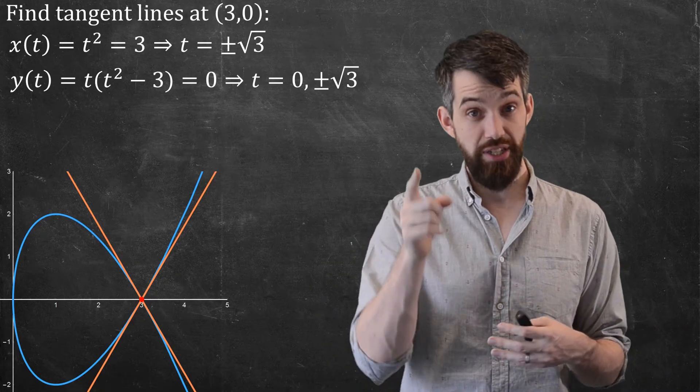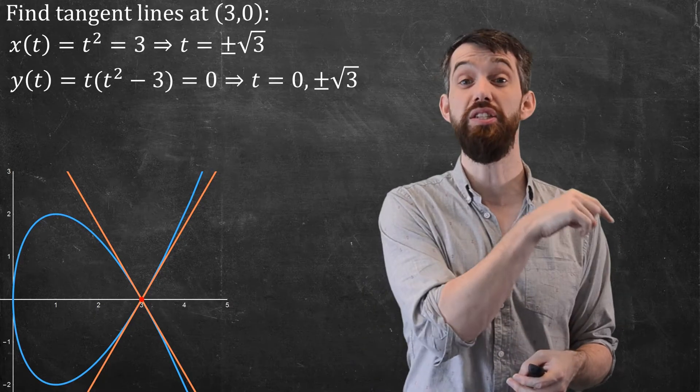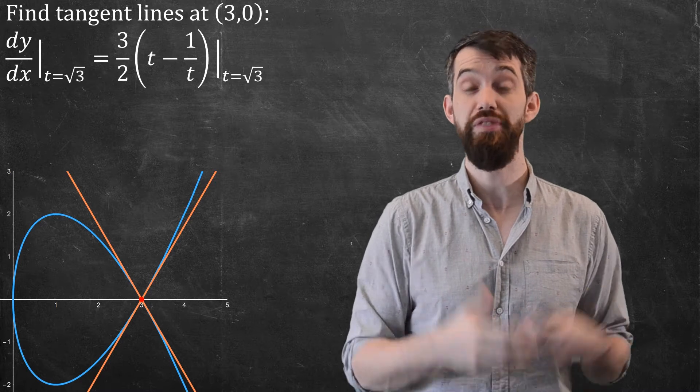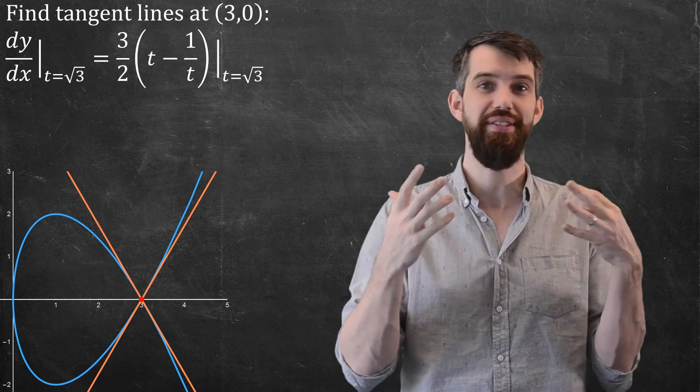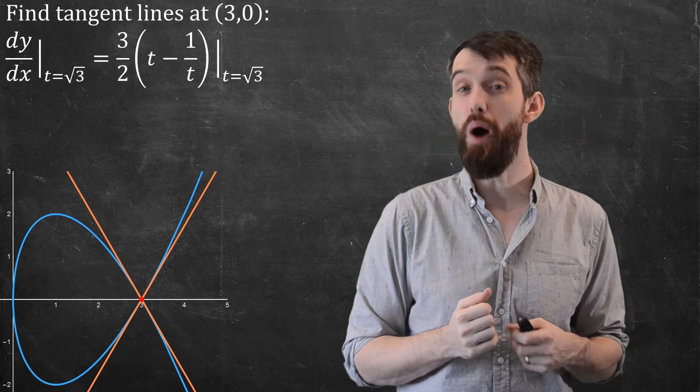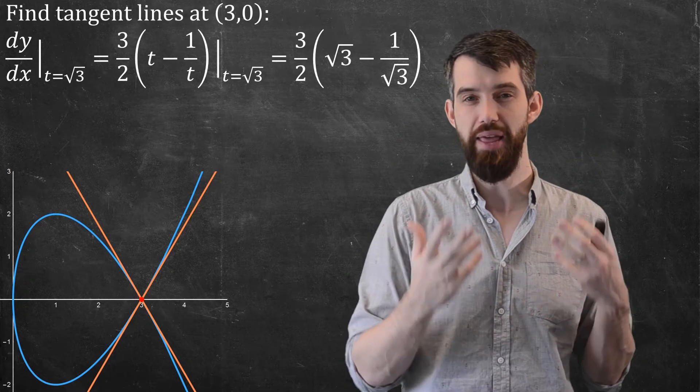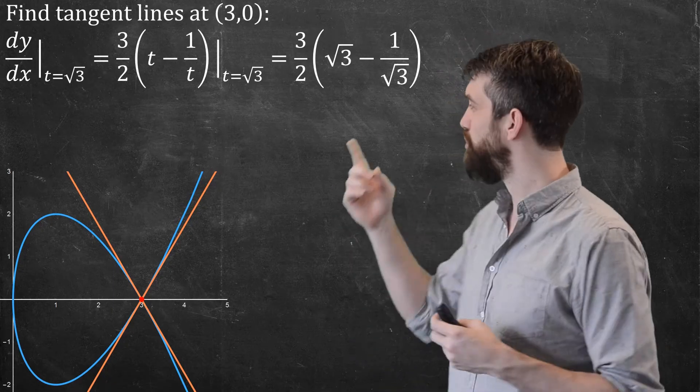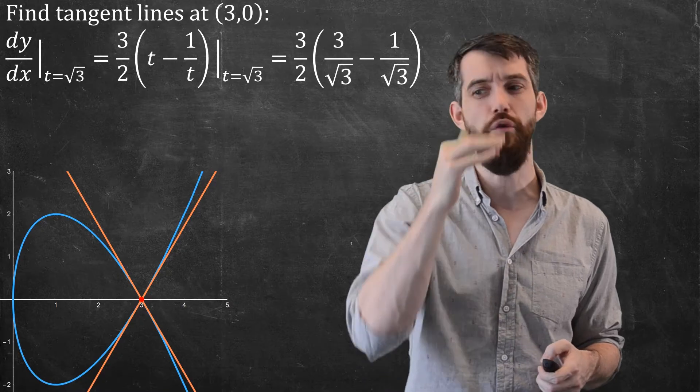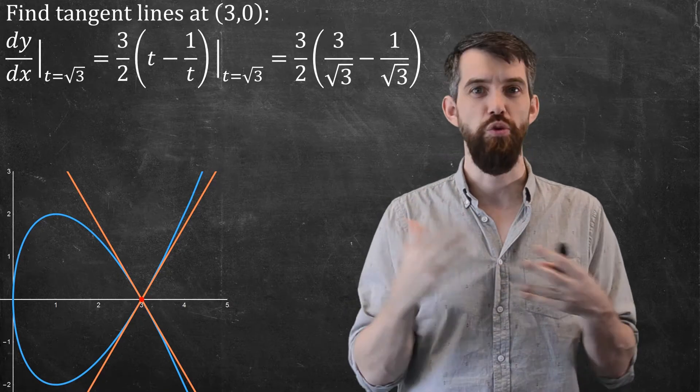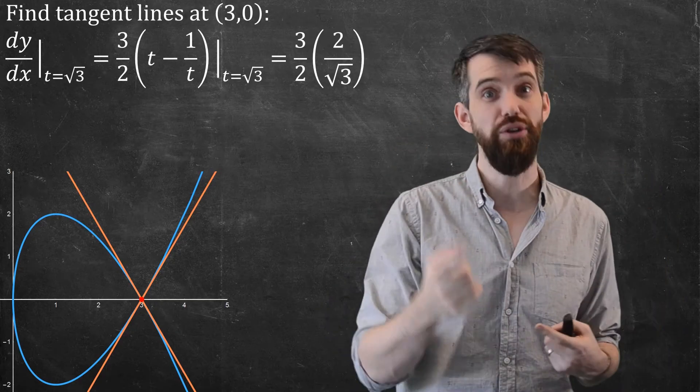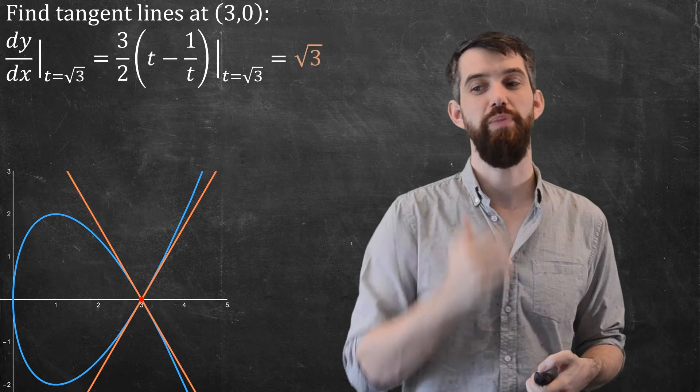So now let's take those t values and plug them into the slope that we computed out before. Recall that when we looked at what the derivative dy/dx was, we got this (3/2)(t - 1/t). Now I'm going to evaluate it first at t = √3, plug that number and I get this. I see this √3 in the numerator, I want to get a common denominator, so I'm going to rewrite that as 3/√3. Then if I look at the numerators, there's a 3 - 1, which is just going to be the same thing as 2/3, the 2's cancel and then it's 3/√3, I can replace that just with √3.